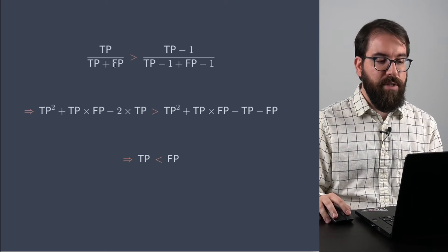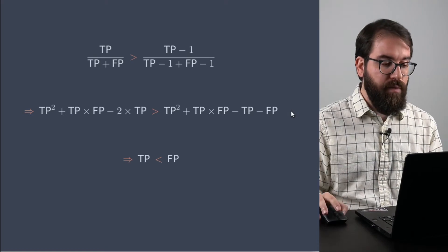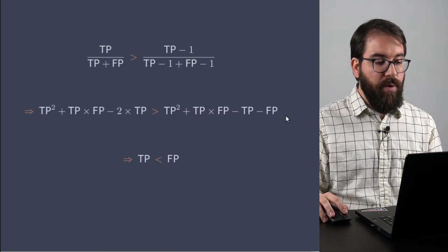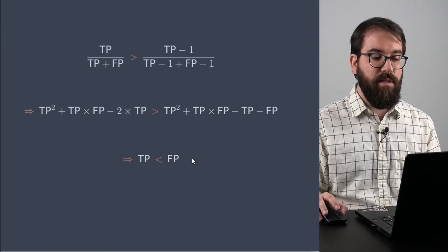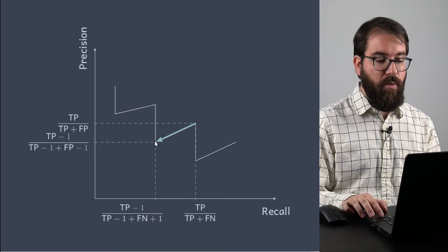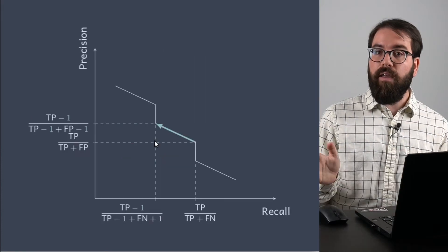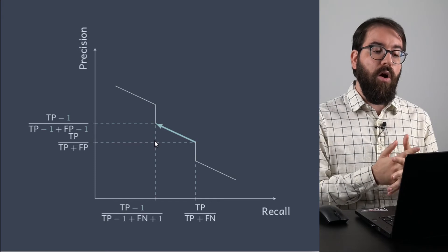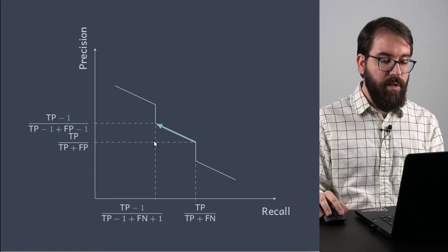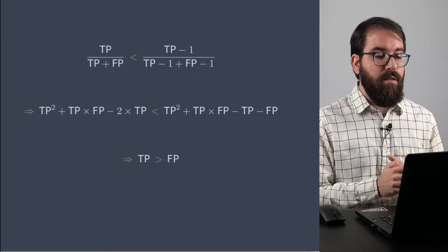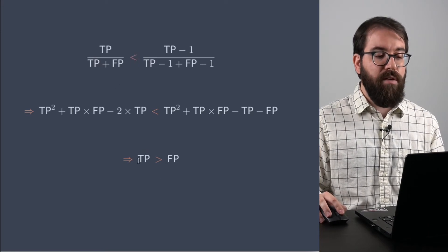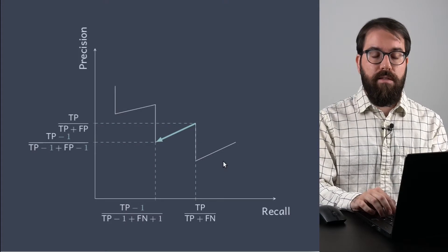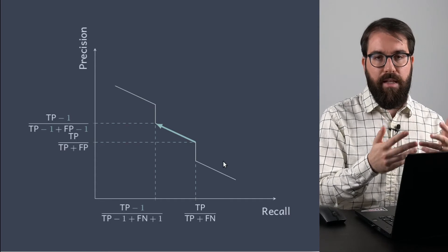Working out the math to determine whether precision is decreasing or increasing, and canceling out terms, you find that precision decreases when true positives are less than false positives — this is the case where the arrow goes downwards. There is another case where precision actually increases, in the opposite direction, applying the same math but replacing greater-than with less-than: we end up with true positives greater than false positives. So on one side of the curve you have spikes, and on the other end you have steps.